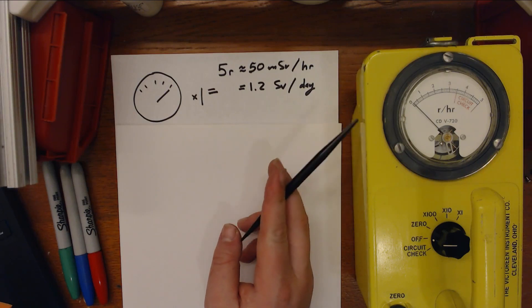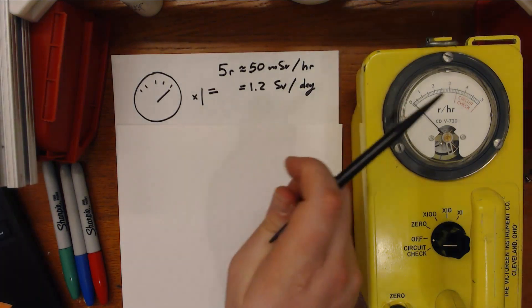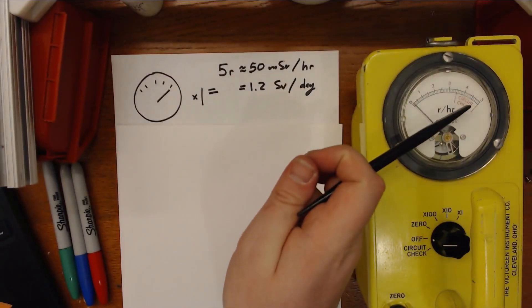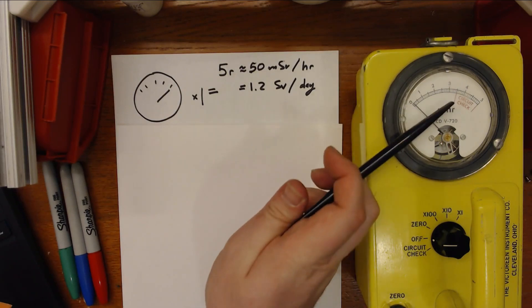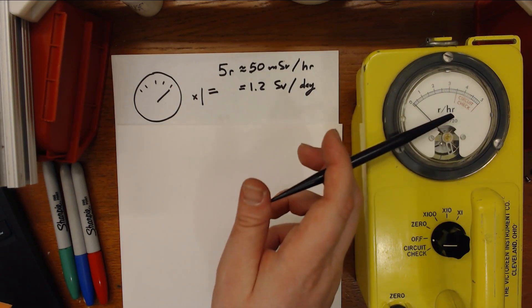To understand the radiation levels that this meter is meant to measure, let's think about what we would be seeing if we were maxing out this meter on each of its three settings. That is to say, if we were at a rating of five here times one times 10 and times a hundred. So that's five Roentgen an hour, 50 Roentgen an hour and 500 Roentgen an hour, right?